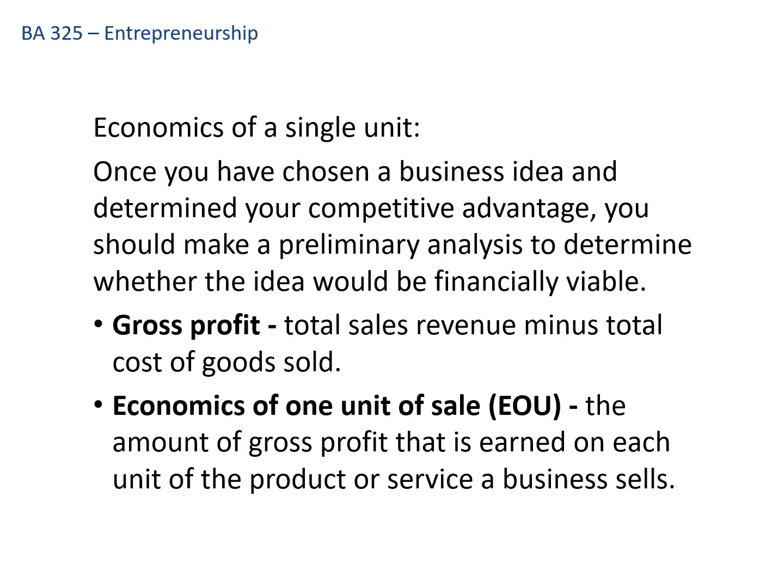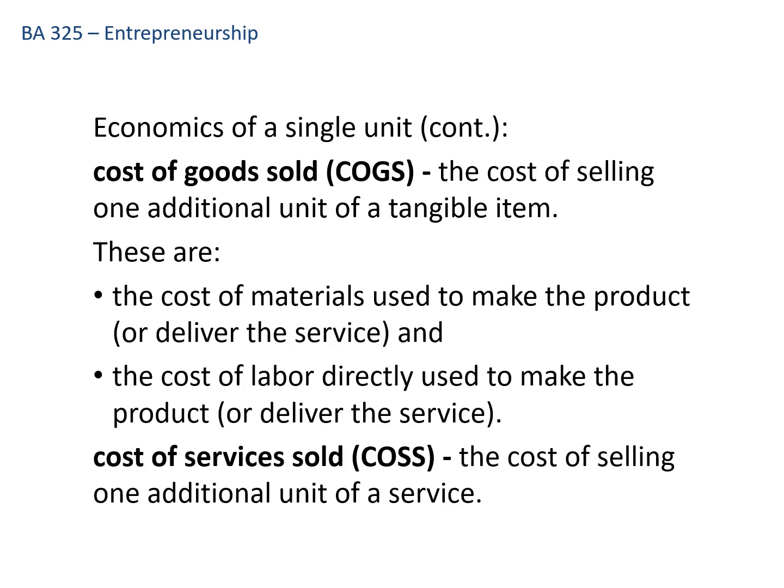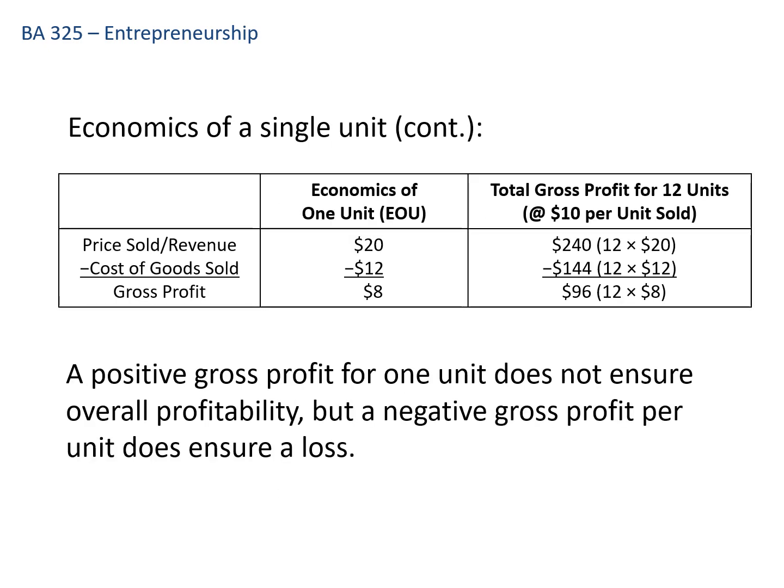The last thing I'll mention is economics of a single unit. Ask: how much will I sell a single unit for, and what is the cost of goods sold — the materials and labor used to make it? Compare those to see if you're making money per unit. For example, if you sell a product for $20 and cost of goods sold is $12, you have $8 of gross profit. That doesn't mean you'll be profitable overall given overhead and advertising, but if that number is negative, you know for sure you'll have a loss and can't move forward. I look forward to talking to you in the next lecture for Chapter 5.